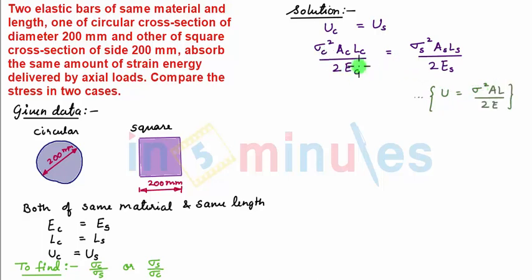In this relation, we see that E_C is same as E_S, so it gets cancelled. L_C is same as L_S, so it gets cancelled. And this 2 and 2 gets cancelled. So, we have sigma_C squared upon sigma_S squared is equal to A_S by A_C.